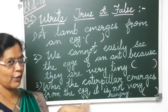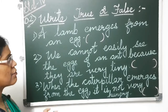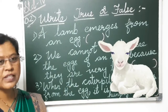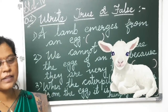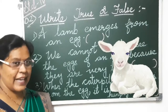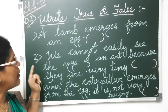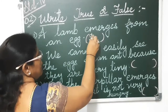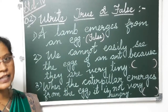Now we will start with the true or false. True or false means whether it is right or wrong. The first one is: the lamb emerges from an egg. Emerges means coming out, breaking the shell and coming out from an egg. Lamb is the young one of sheep. Have you ever seen a sheep's egg? No — the young one of sheep grows in its mother's tummy. So the lamb emerges from an egg is a wrong statement. It is false, because a lamb grows in its mother's tummy.